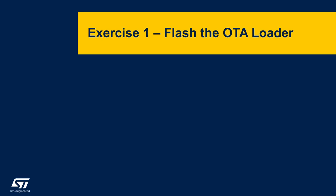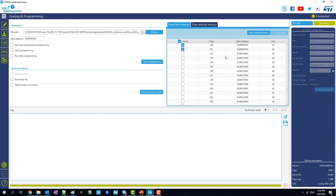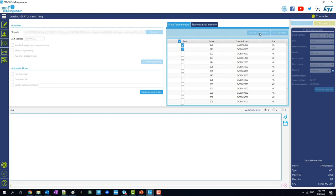Now we are going to download the OTA loader inside the STM32WB microcontroller. Before we start, use the STM32Cube Programmer to erase the flash memory. You shouldn't remove every sector of the flash because you want to leave the FUS and the wireless stack. Then navigate to the project directory to flash the OTA loader. Take a moment to erase the flash memory.